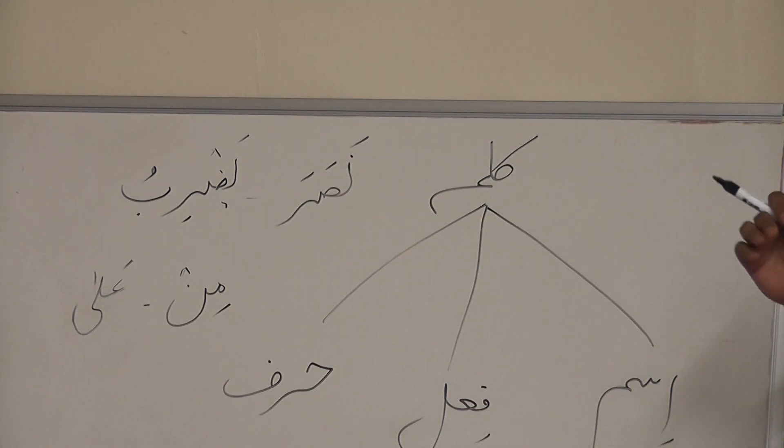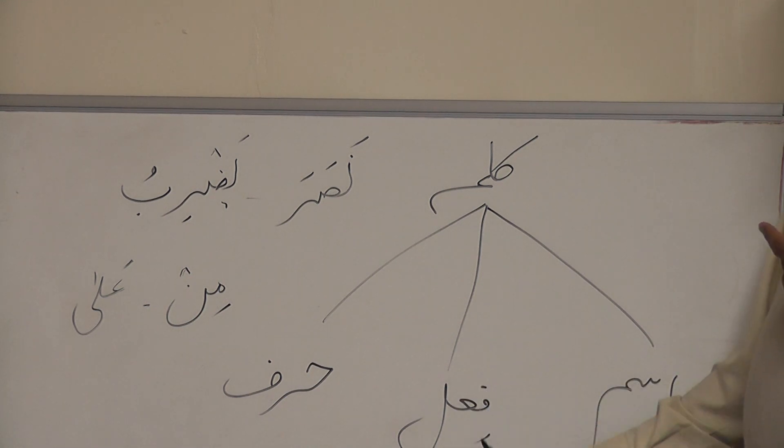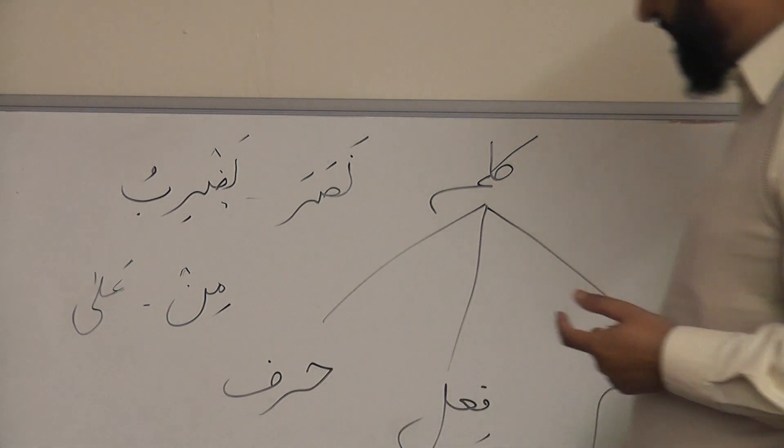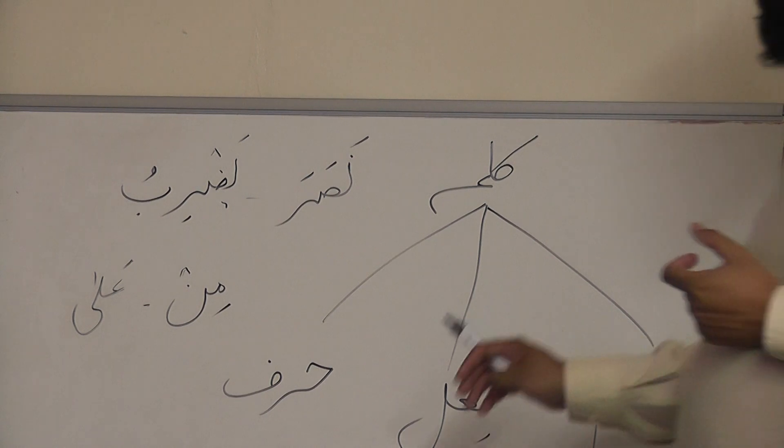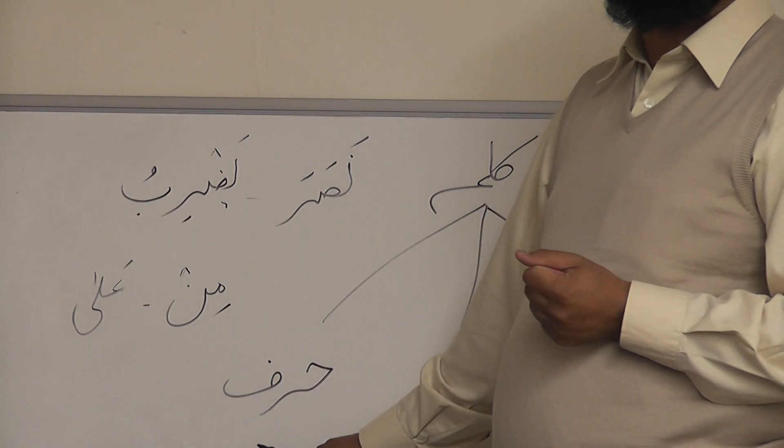So these are three types of kalima or words—meaningful word: ISM, FAIL, HARF—noun, verb, and particle.